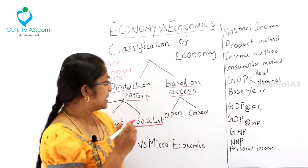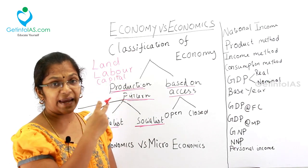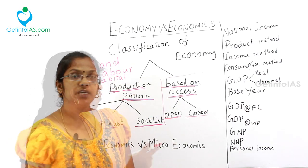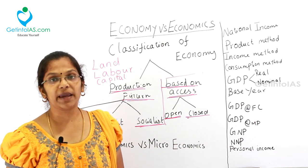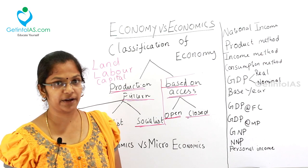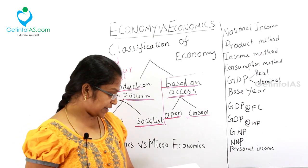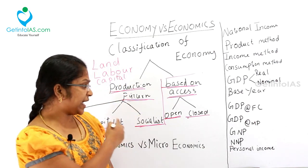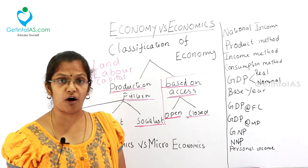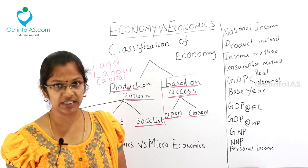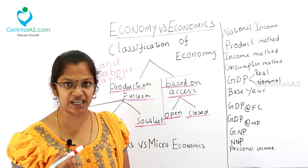Indian economy is a mixed economy where you can see private players, and some public services are provided by the government — like public hospitals, public schools, government schools. So Indian economy is a mixed economy. This is the classification based on production pattern. The next classification is based on access. Based on access, the economy can be classified into open economy and closed economy. In an open economy, there is free movement of goods, services, capital and people across countries.